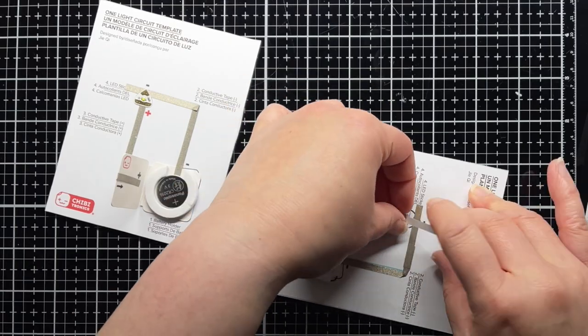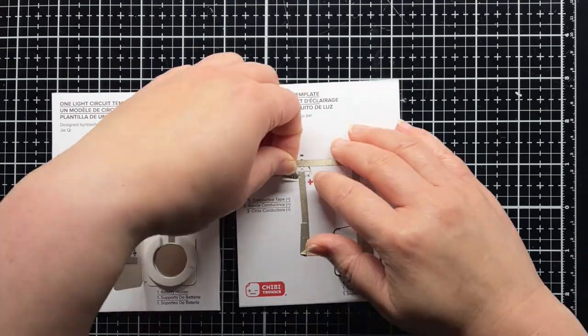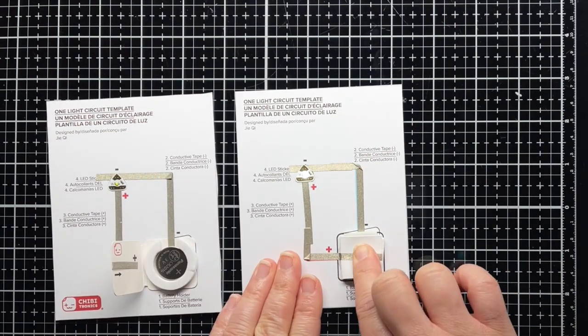As you'll see, that template has two different places where I've repaired tape problems by adding more tape, and the LED sticker still functions the same as the first circuit.